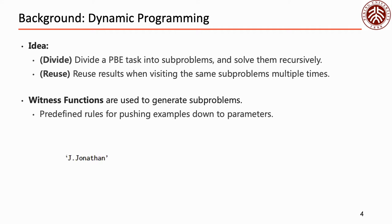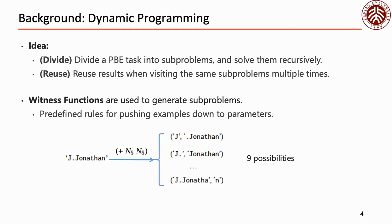For example, suppose we want to use operator string concatenation to get string j.Jonathan. The Witness function of string concatenation would generate nine possibilities. If the first possibility is taken, the synthesis task is divided into two subproblems: synthesizing a program outputting j, and synthesizing a program outputting .Jonathan. Combining the resulting programs of these two subproblems provides a solution to the original task.